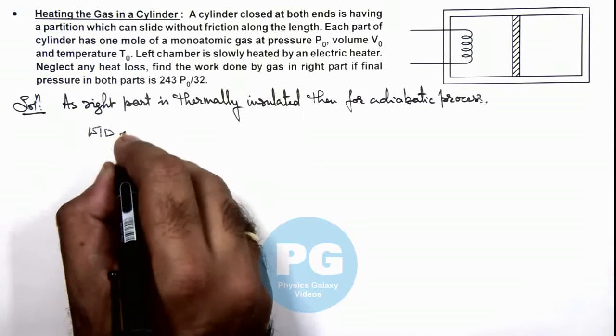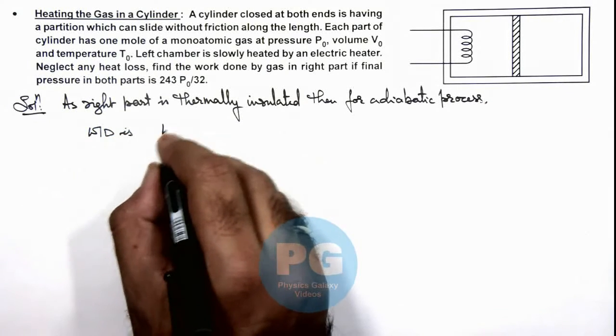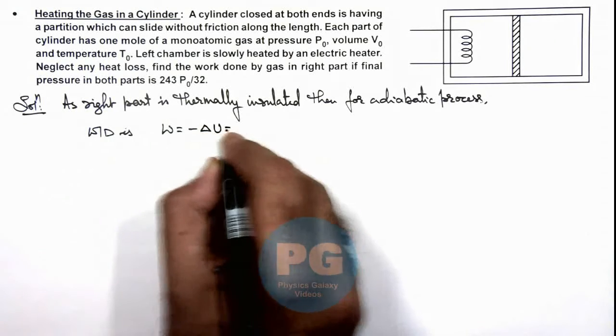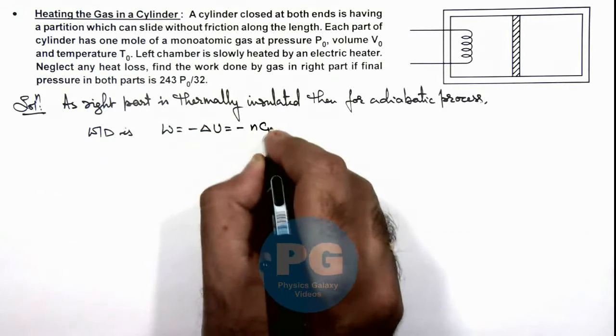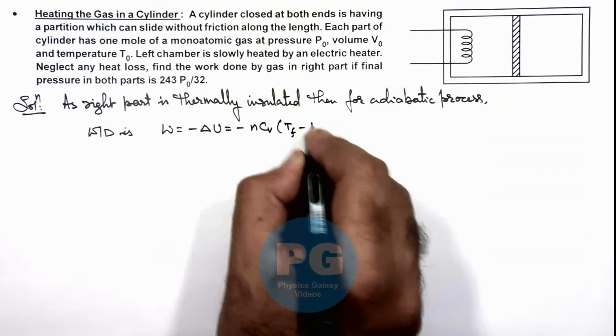Work done is the change in internal energy of gas, which is minus n times c_v times (T_final minus T_initial).